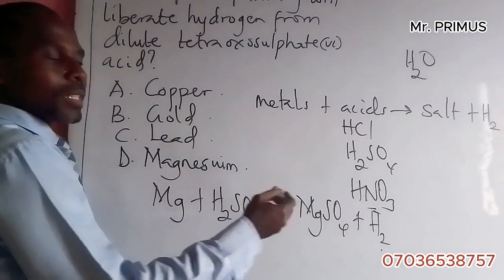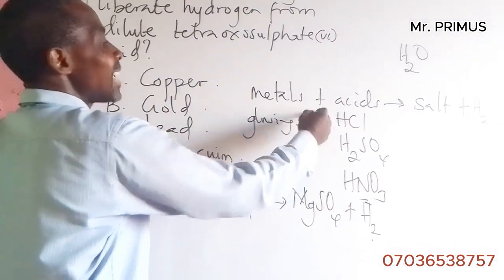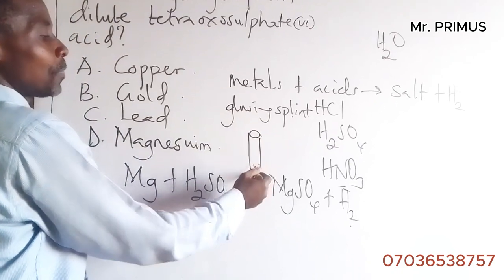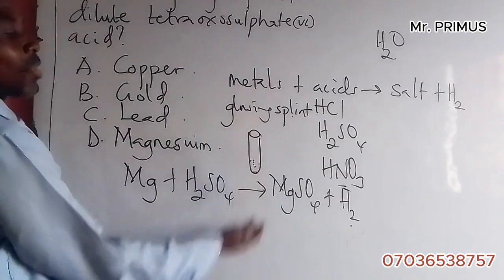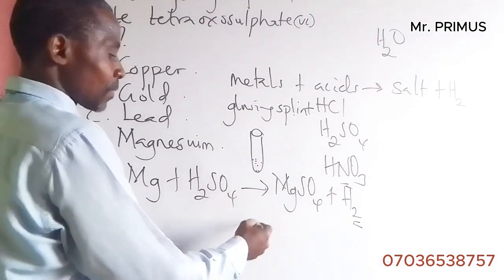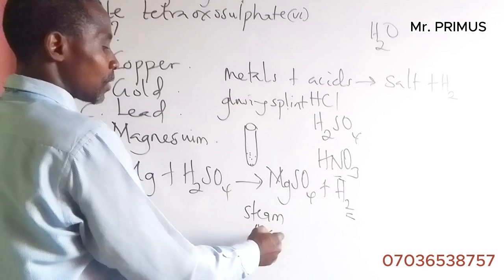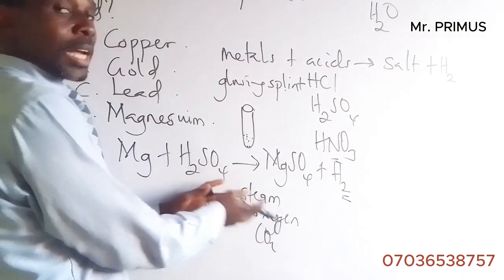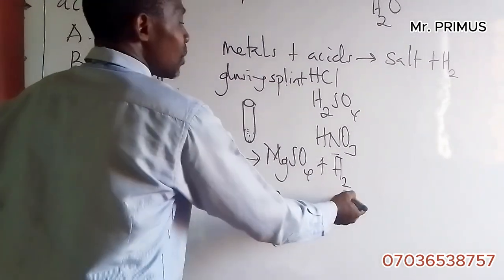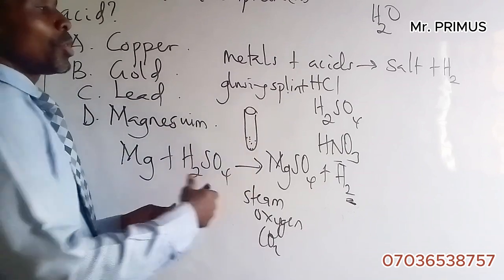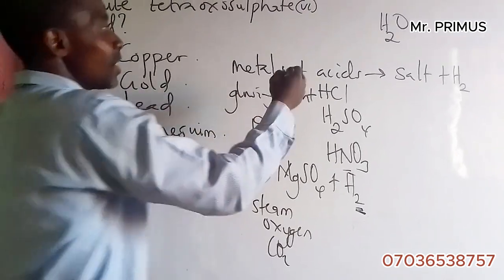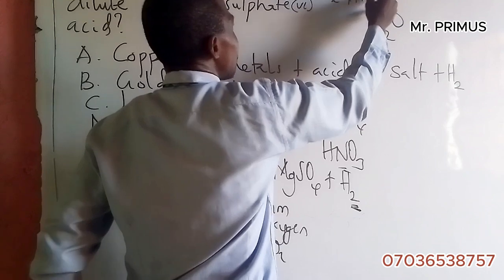Now, the test for hydrogen: to test for hydrogen gas, you insert a glowing splint. If hydrogen is coming out — say you have magnesium ribbon reacting with dilute H₂SO₄ — a colorless gas will evolve. To confirm it is hydrogen, bring a lit splint to it and you will hear a pop sound.